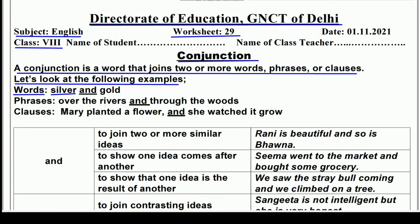We can use conjunctions to join words — for example, 'silver and gold.' Here there are two words: 'silver' and 'gold,' and 'and' is the conjunction joining them. Similarly, we can join phrases — for example, 'over the rivers and through the woods.' Here 'and' joins two phrases, so this is called a conjunction.